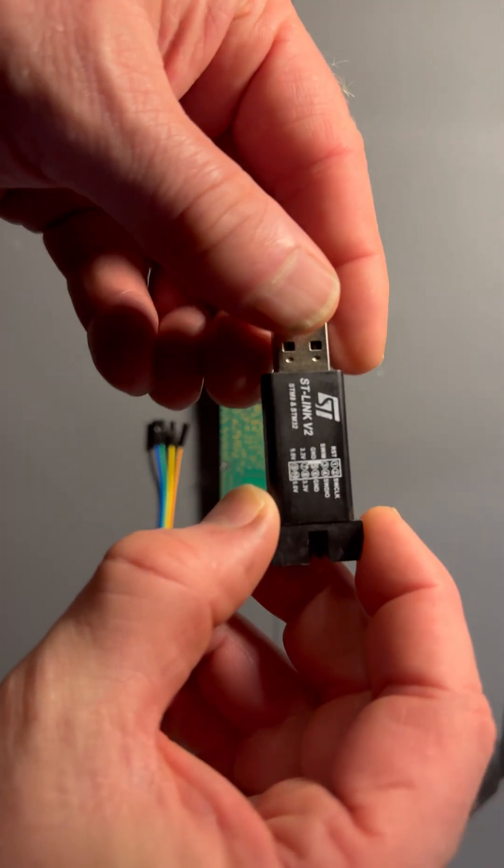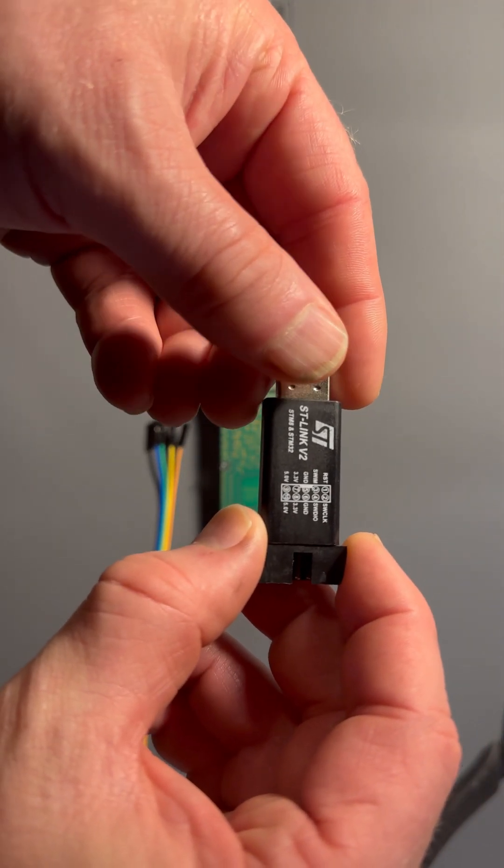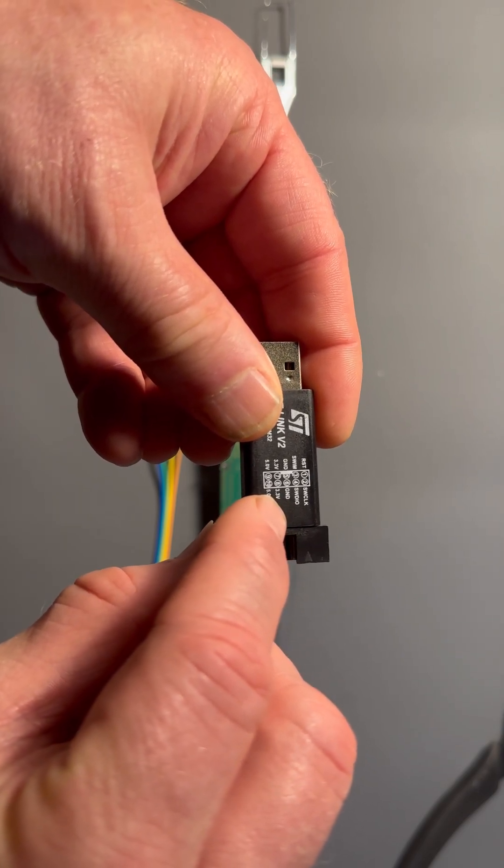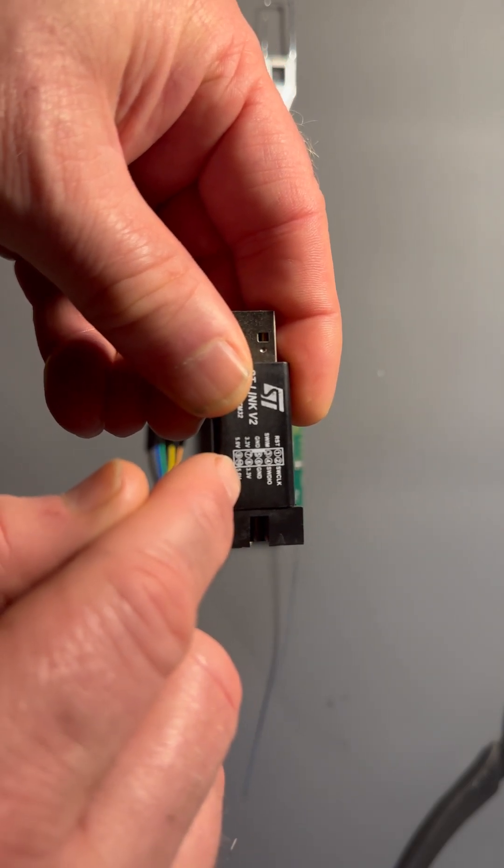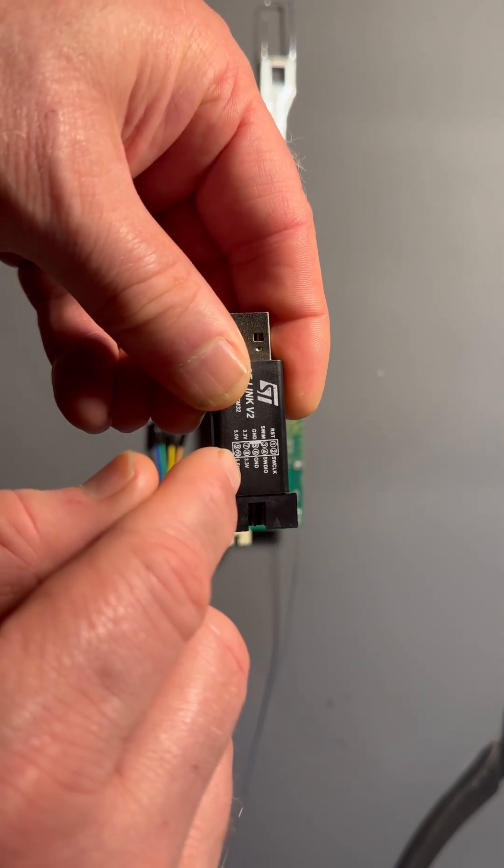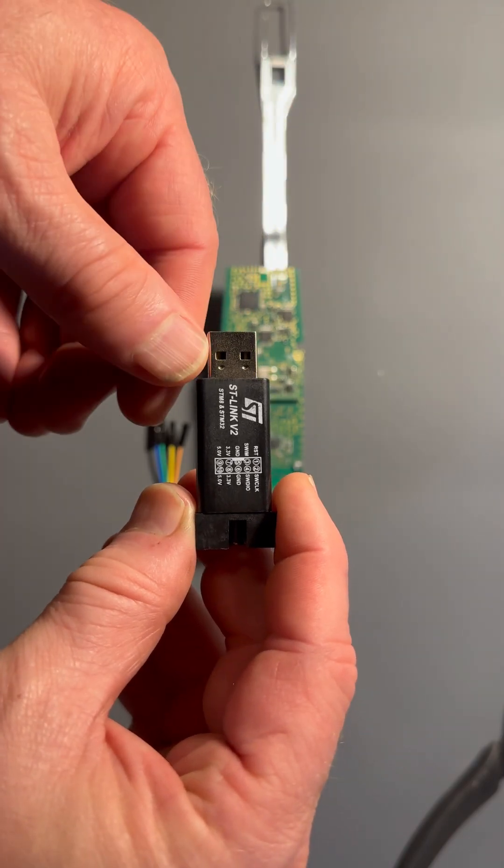To program, we're going to use this ST link. We're going to use these four pins: SWCLK, DIO, ground, and 3.3 volts. Some instructions say you don't need the 3.3 volt hookup. I could not get it to work without that, even with the batteries in. It just didn't seem like it wanted to trigger to let it flash.